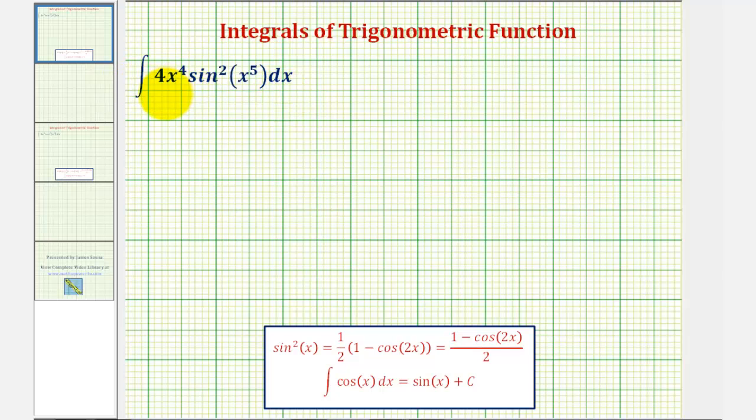We want to find the antiderivative or evaluate the indefinite integral. Let's begin by factoring out this four and write this as four times the integral of x to the fourth sine squared x to the fifth.